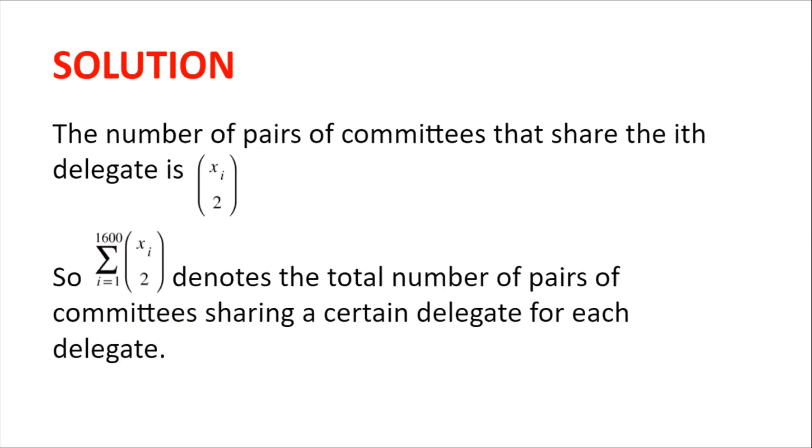Because the ith delegate is in xi committees, the number of pairs of committees that share the ith delegate is xi choose two. So the sum of xis choose two denotes the number of pairs of committees sharing a certain delegate for each delegate.